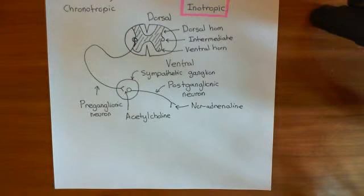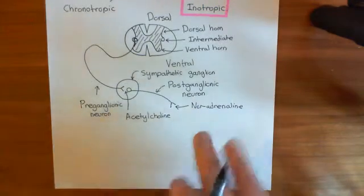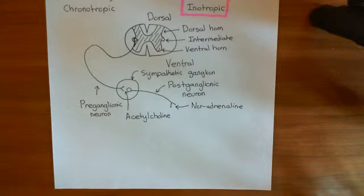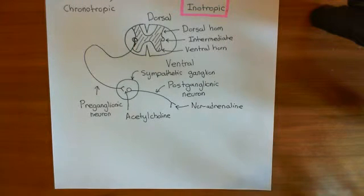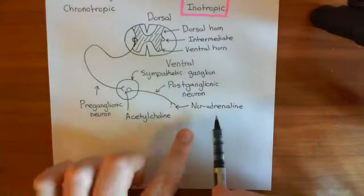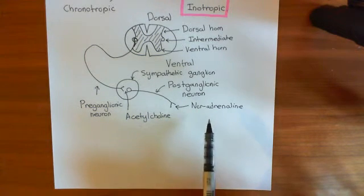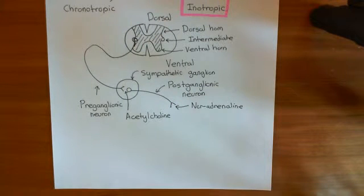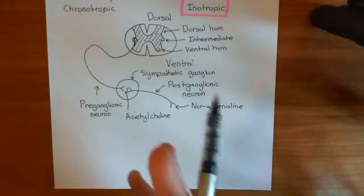Welcome back to this next video in which we're discussing the sympathetic nervous system and its effect on the heart. Before we go into the details of how noradrenaline being released onto cardiomyocytes actually produces an increase in the force of contraction that the cardiomyocytes can generate, I want to give you the big picture of how we are actually going to increase the force of contraction of the heart. Then we'll look at the specifics — the signalling pathway associated with noradrenaline.